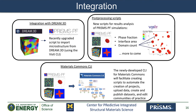Here are some of our recent efforts towards integrating PRISMS-PF with other computational tools. First, we have a recently upgraded script to import microstructures from Dream3D using the VisIt CLI, which is very useful for grain growth simulations. We have new post-processing scripts that take the output files from PRISMS-PF simulations and automatically calculate useful properties like phase fraction, interface area, interface length in 2D, and domain count. Finally, the newly developed CLI for Materials Commons will facilitate creating scripts to automate the creation of projects, upload simulation results, create and publish datasets, and edit communities of practice.